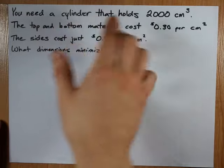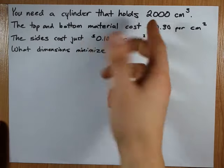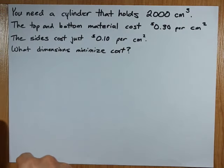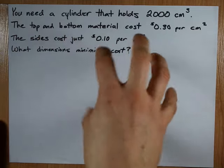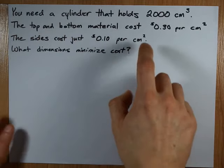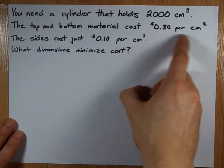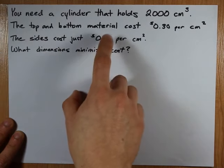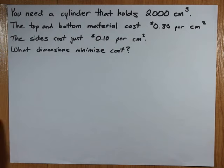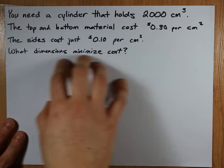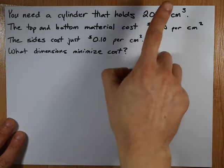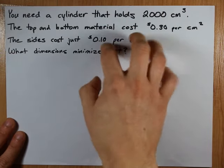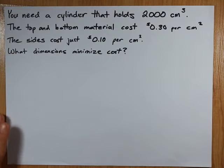Here we have a cylinder that needs to hold 2 liters, that's 2,000 centimeters cubed. The top and bottom of the cylinder are going to be made out of material that costs 30 cents per centimeter squared, and the sides cost just 10 cents per centimeter squared. We want to figure out the dimensions of a cylinder that holds this volume that minimizes the cost according to these parameters.